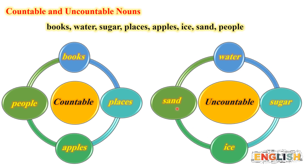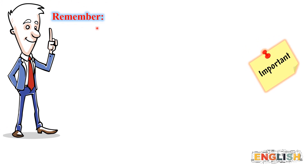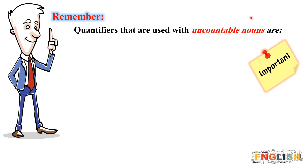In the negative form, we have the subject followed by 'should', and 'should' is followed by 'not' — 'shouldn't' / 'should not' — and again it's followed by the base form of the verb. In the question form, we start by using the verb 'should', followed by the subject, and again we have the base form of the verb after the subject.